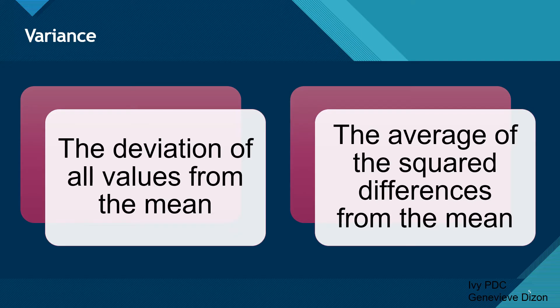Our second measure of dispersion is variance. When we say variance, this is the deviation of all values from the mean. Mean and variance are interrelated with each other. A simple definition would be the estimate of how far a number is from the mean value — how far the data points differ from the mean, or the distance of the different data from the mean. We compute this by getting the average of the squared differences from the mean.